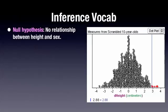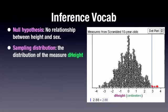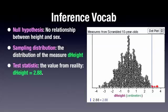The null hypothesis is that there is no relationship between height and sex. The sampling distribution is shown in the picture. It's the distribution of the measure D-height. But remember, that's a fantasy. The reality is the test statistic. The value from reality D-height is 2.88.